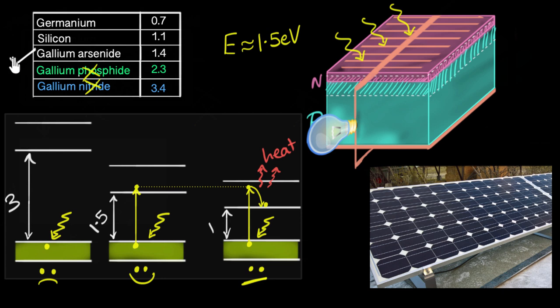Gallium arsenide is definitely used in construction of solar cells. But silicon is also useful. Even though silicon is less efficient as a solar cell, it's much cheaper.